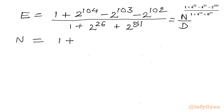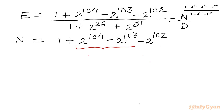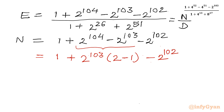The numerator is 1 plus 2 raised to the power 104, minus 2 raised to the power 103, minus 2 raised to the power 102. From the second and third terms I will take 2 raised to the power 103 common. So 2 raised to the power 103 is common, then in the bracket I have 2 minus 1, and then minus 2 raised to the power 102 as it is.